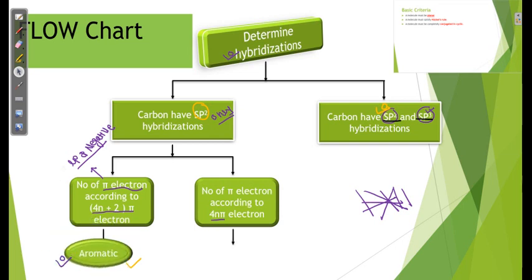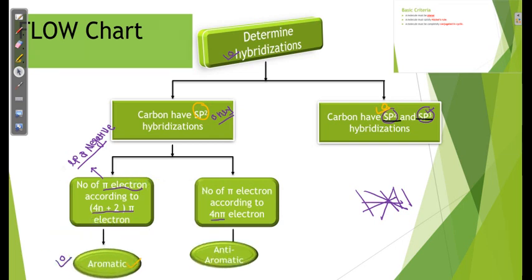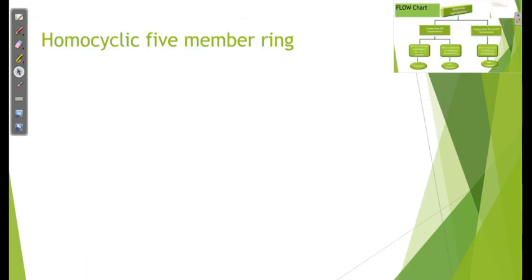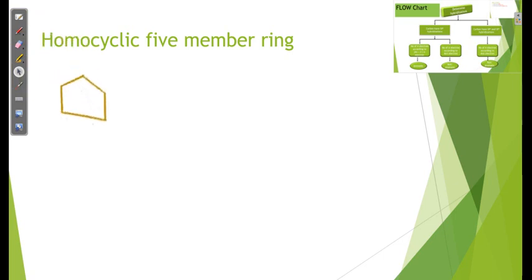In the last aromaticity chart part 1, we covered three-member and four-member rings. Today I have focused on the homocyclic five-member ring, and later on some heterocyclic five-member rings which will help you. Let us look at these examples — they are very important. Make sure to focus. The first goal is to determine the hybridizations.